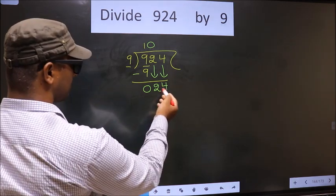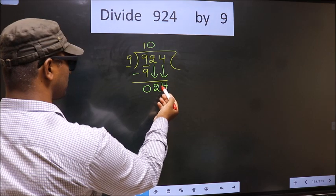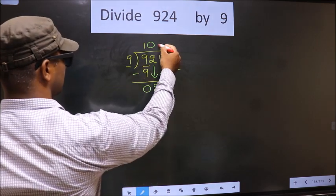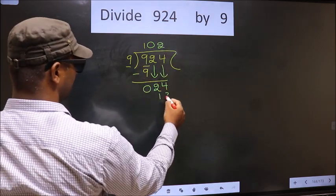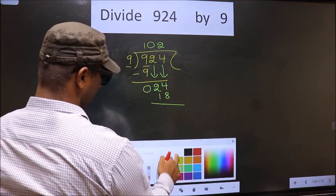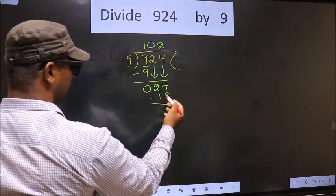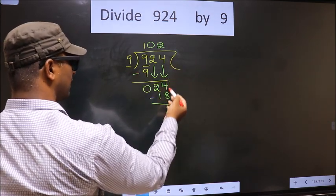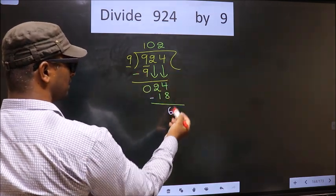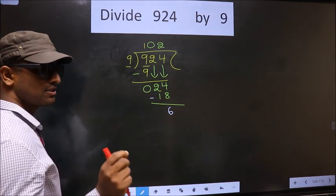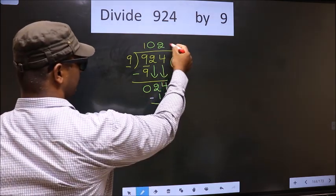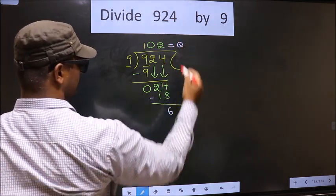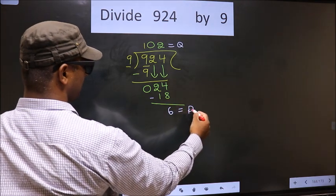Here we have 24. A number close to 24 in 9 table is 9 to 18. Now you subtract. 24 minus 18 is 6. 6 is smaller than 9 and we don't have any numbers to bring them down. So this is where we stop. Therefore this is our quotient and this is our remainder.